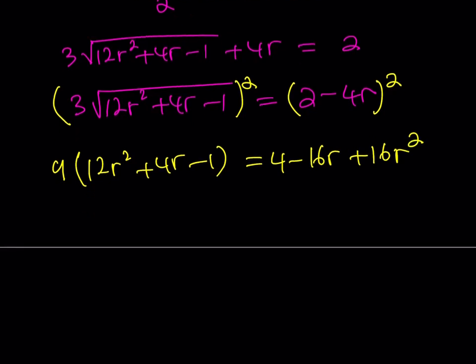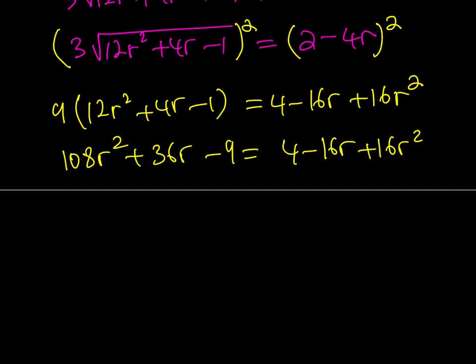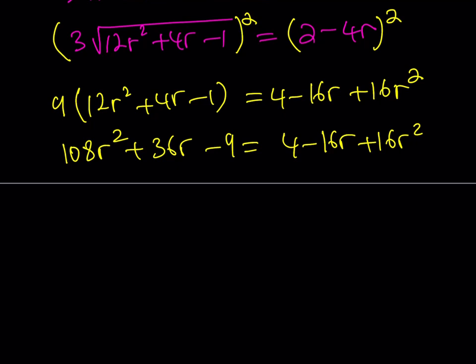Let's go ahead and distribute here. We get 108 R squared plus 36 R minus 9 is equal to 4 minus 16 R plus 16 R squared. If you go ahead and subtract everything from the left-hand side, 108 minus 16 is going to be 92 R squared and then 36 R plus 16 R, that's going to give us 52 R. Negative 9 minus 4 is going to give you negative 13.